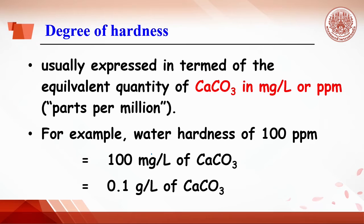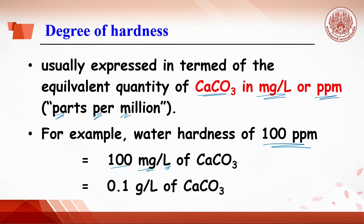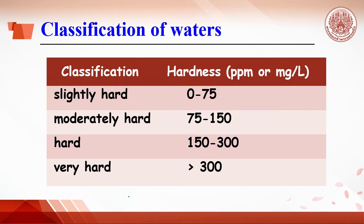Hardness of water is usually expressed in terms of the equivalent quantity of calcium carbonate in milligrams per liter, or ppm, which stands for parts per million. For example, a water hardness of 100 ppm means 100 milligrams per liter of calcium carbonate, or 0.1 grams per liter of calcium carbonate in water. Here is the general guideline for classification of water.